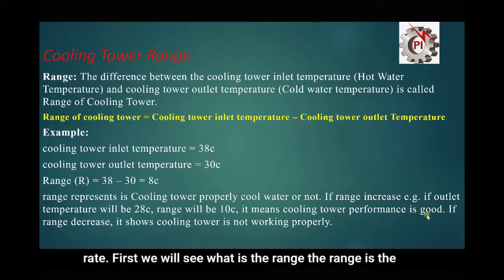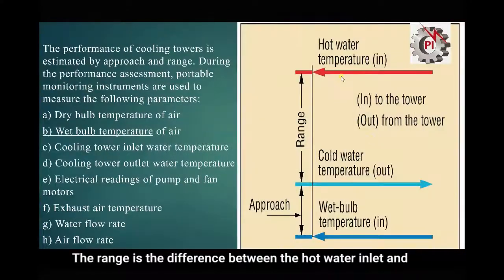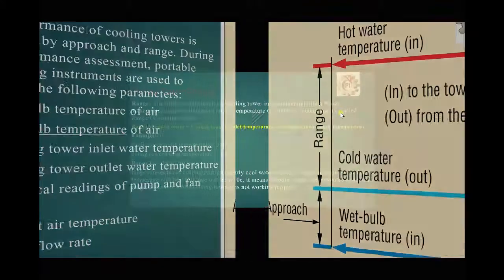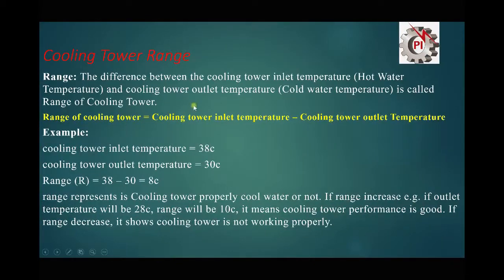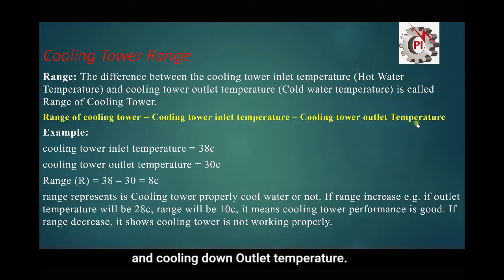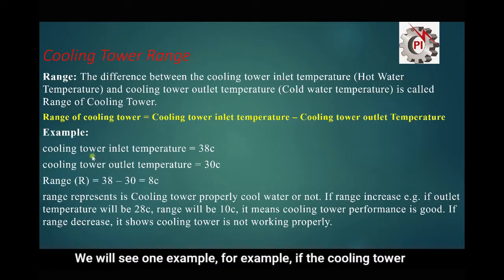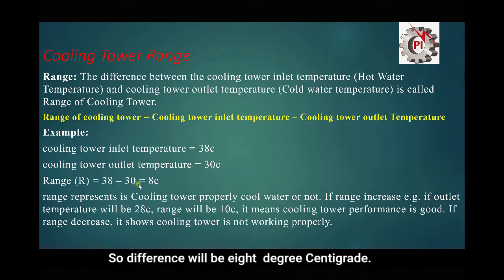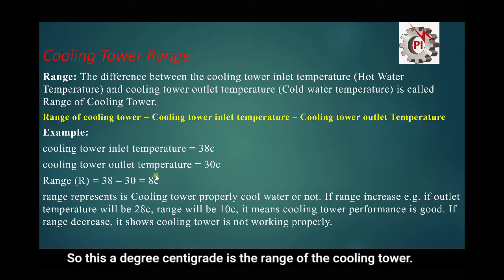First we will see what is range. The range is the difference between the hot water inlet and the cold water outlet — this difference of temperature is called the range. So the range of a cooling tower is the cooling tower inlet temperature minus the cooling tower outlet temperature. For example, if the cooling tower inlet temperature is 38°C and the outlet temperature is 30°C, the difference is 8°C, so 8°C is the range of the cooling tower.